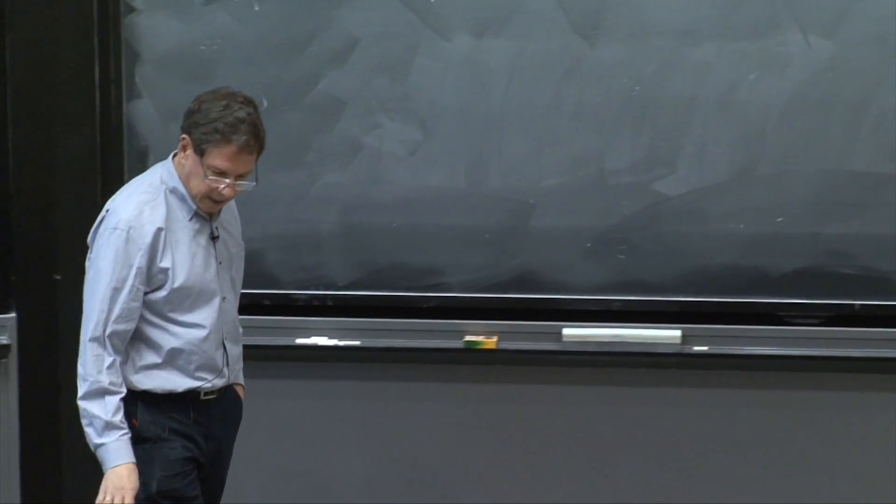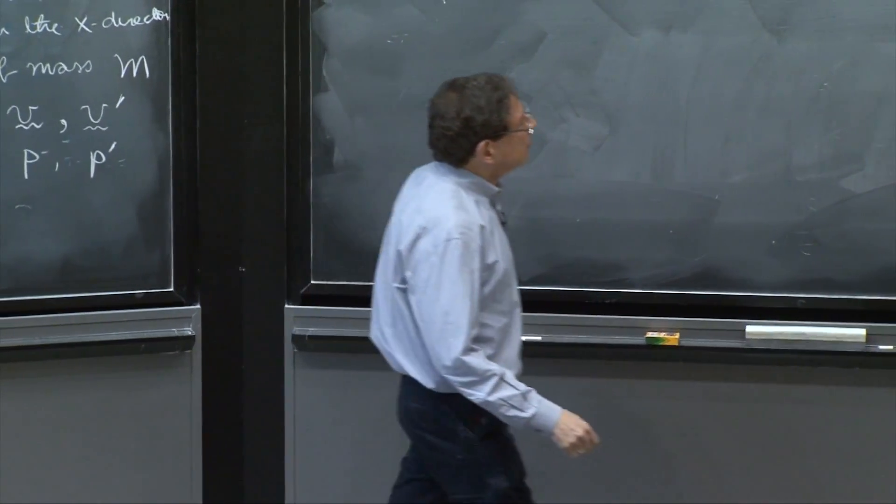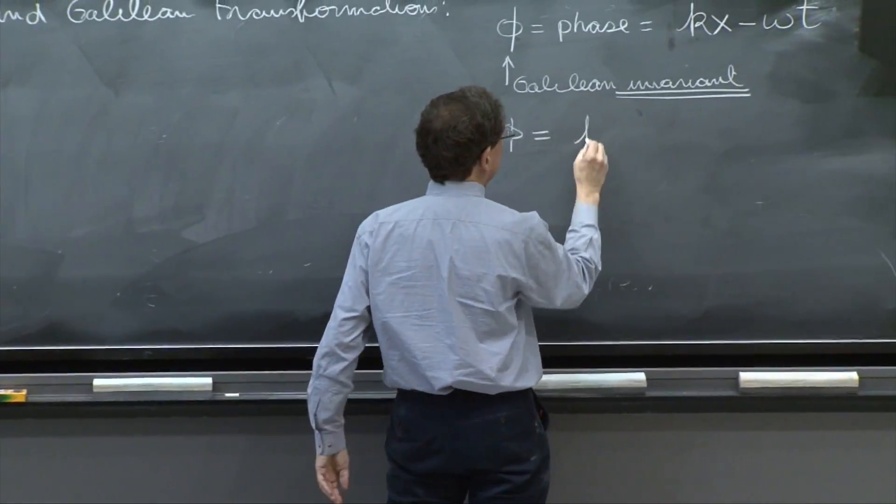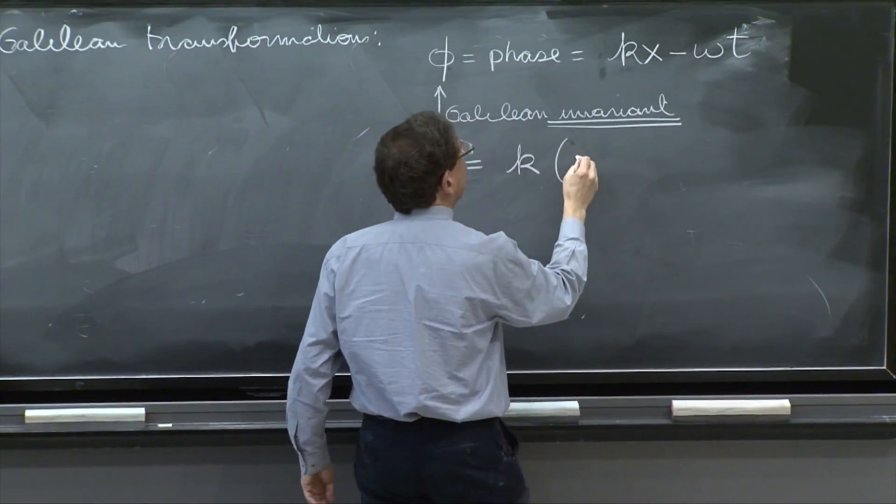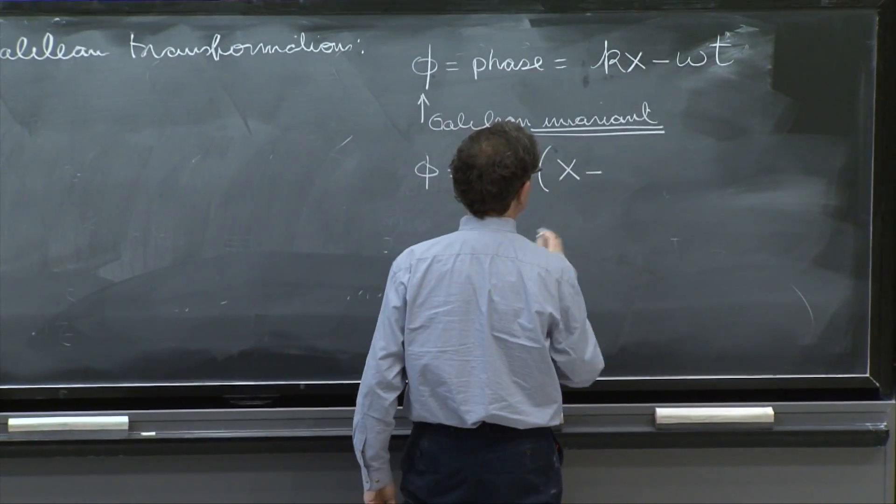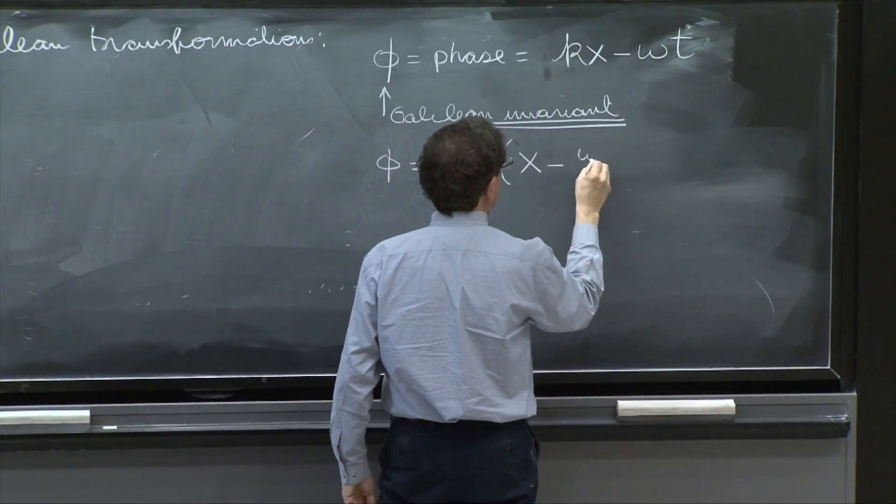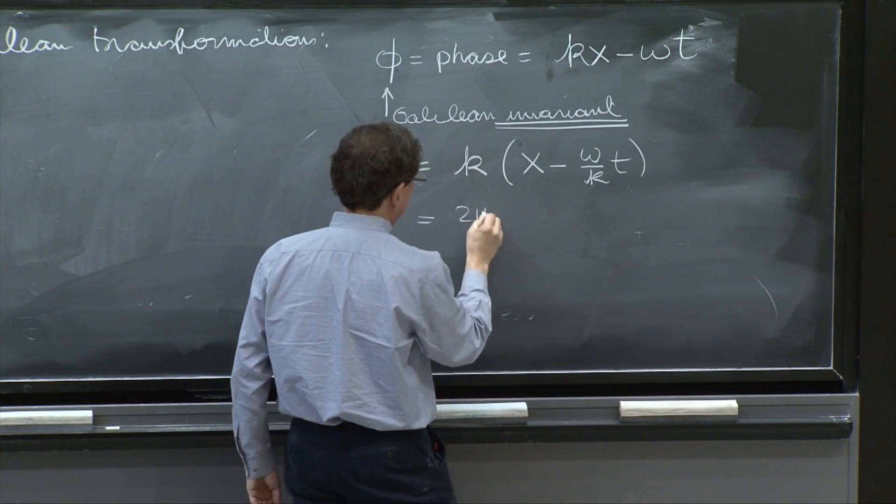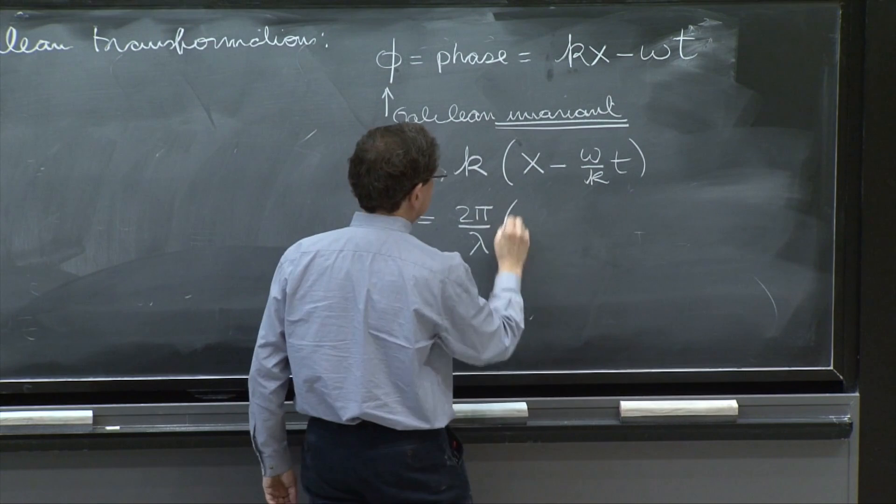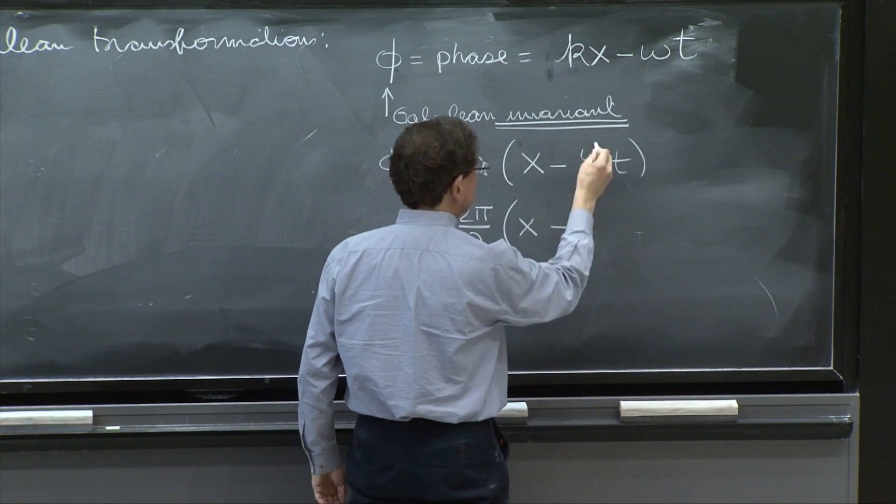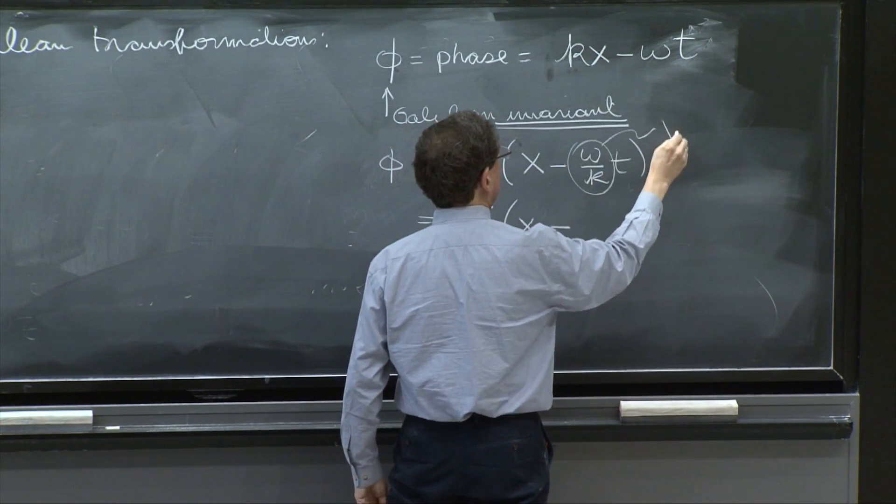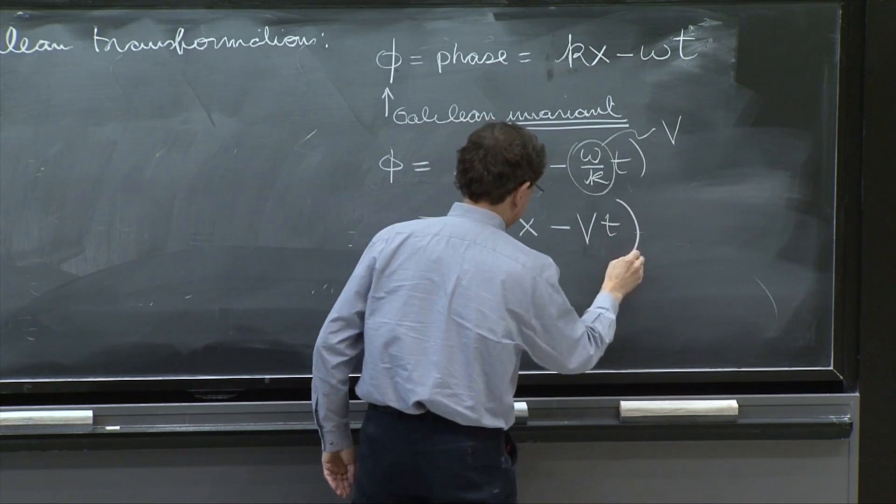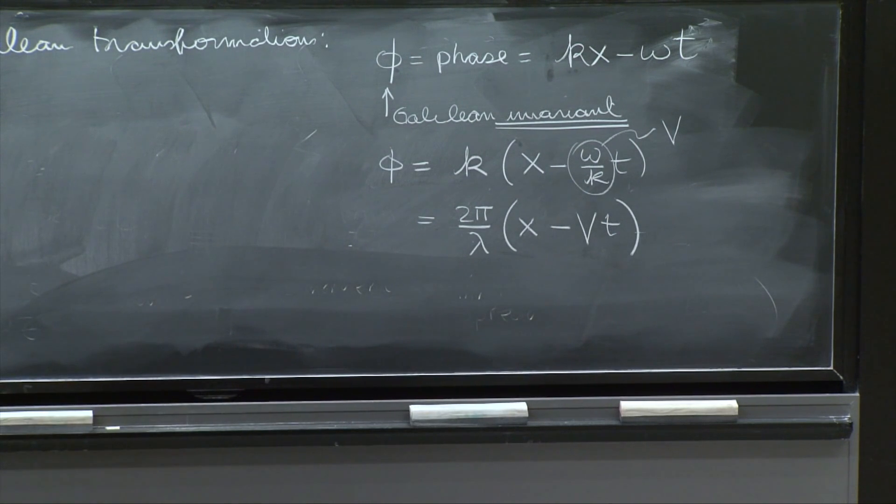It's going to be an invariant. And we can rewrite this phase in a perhaps more familiar way by factoring the k. And then you have x minus omega over kt. And this is 2 pi over lambda x minus. This quantity is called the velocity of the wave.